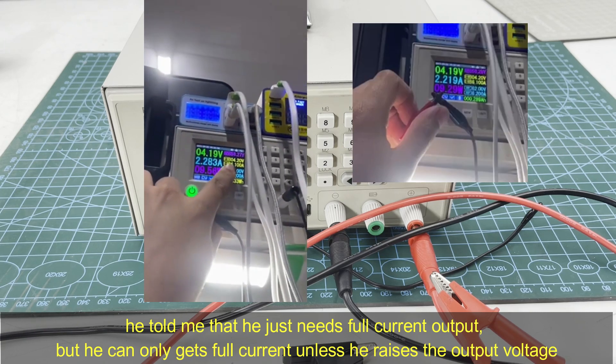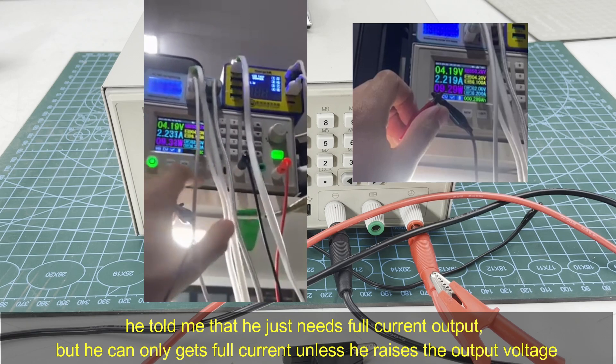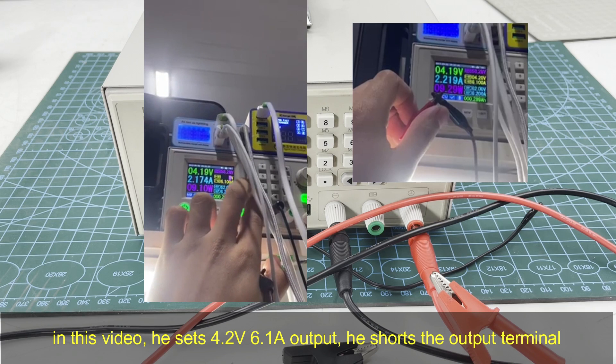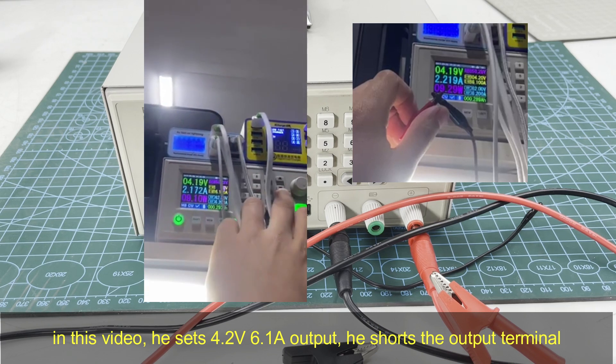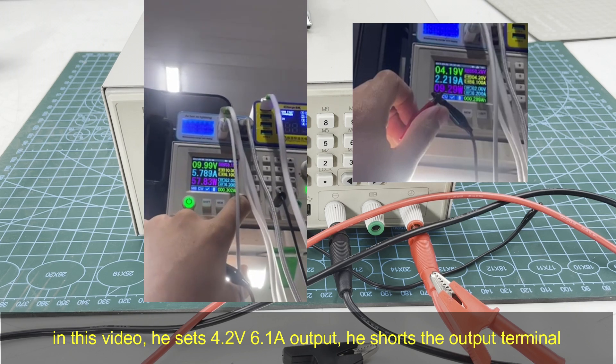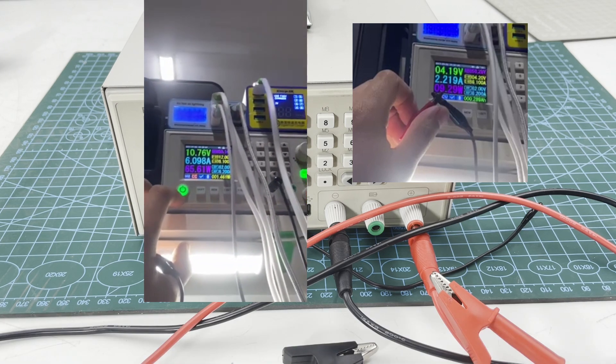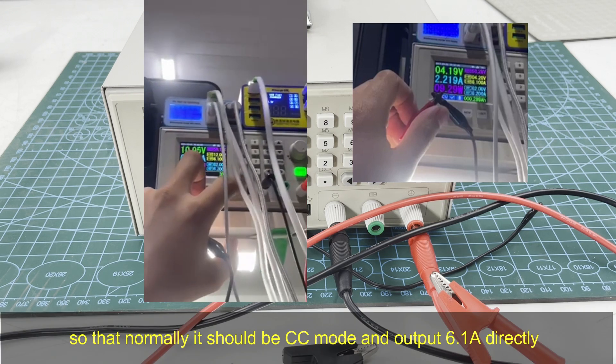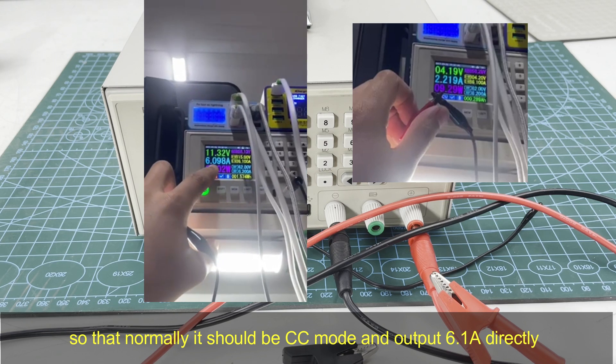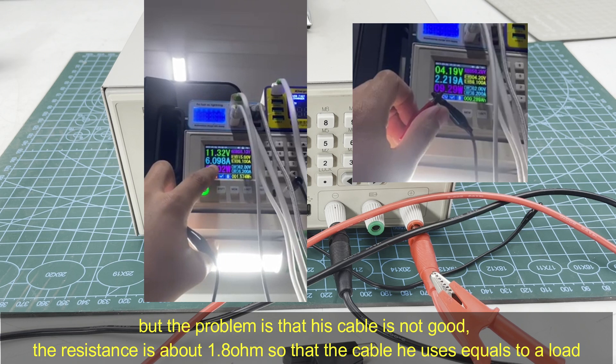For output current, unless he raised the output voltage, you can see in this video he sets 4.2 volts and 6.1 amps and shorted the output terminals. Normally it should be CC mode, constant current mode, and the current should be 6.1 amps.